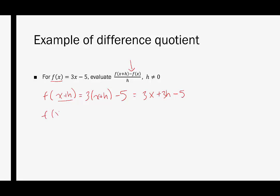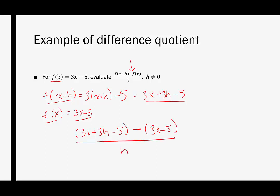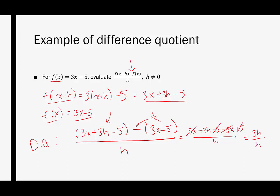This is part 1 of the numerator. Part 2 is just f of x, which is exactly what was given: 3x minus 5. Now we're going to substitute these in. So we have 3x plus 3h minus 5 minus 3x minus 5, all divided by h. The second expression absolutely needs to be in parentheses because we're subtracting the entire expression. When we distribute the subtraction sign, this gives us 3x plus 3h minus 5 minus 3x plus 5, divided by h. The 3x and negative 3x cancel, the negative 5 and positive 5 cancel, and we end up with 3h over h, which equals 3.